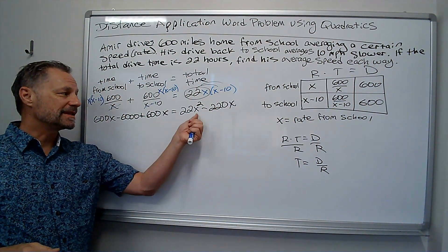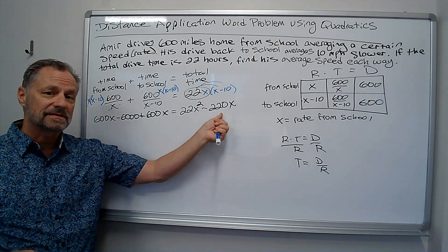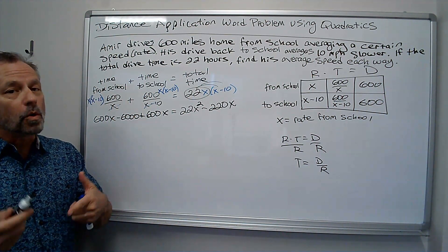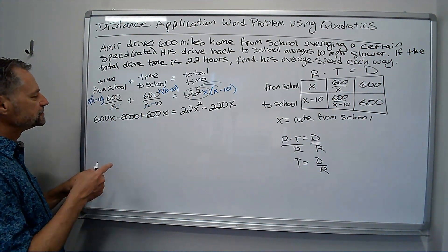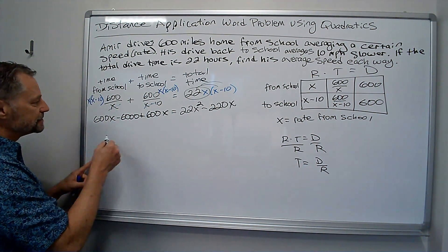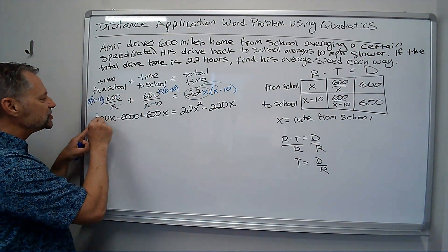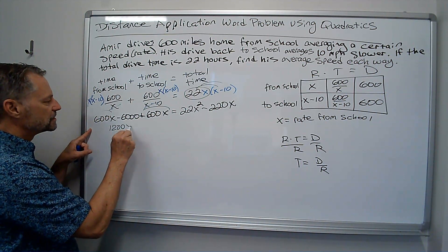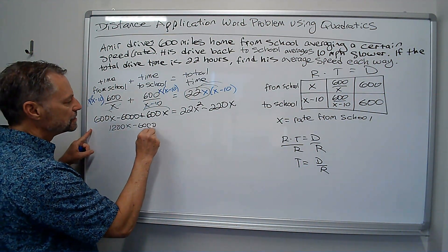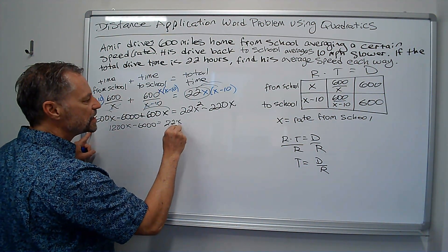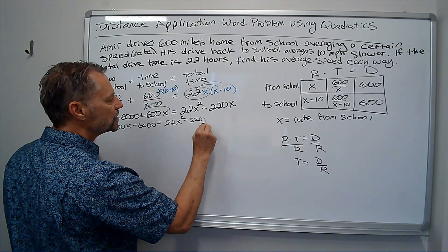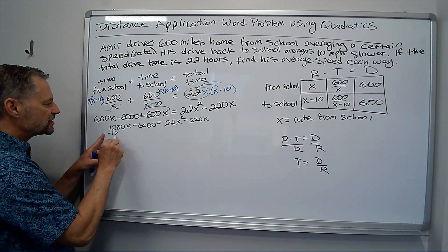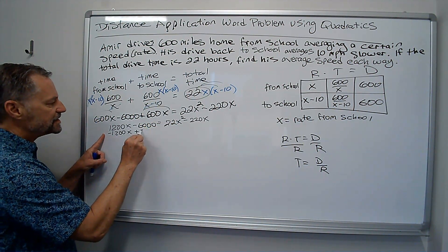What I have to realize, I have both an X squared and an X. So, I'm going to have to set it equal to zero and factor or use the quadratic formula. Let's see. This is, I can combine these two. Those are like terms. That's 1,200X. So, I have 1,200X minus 6,000 equals 22X squared minus 220X.